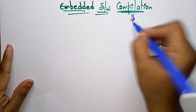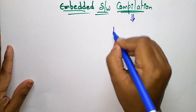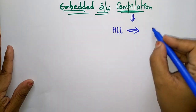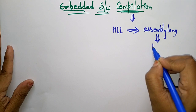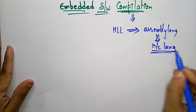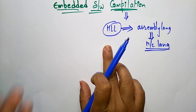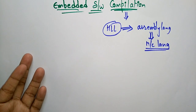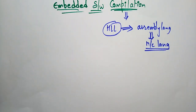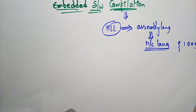Compilation is nothing but a conversion of one language to another language. The high level language is going to be converted into assembly language and then to machine level language. This machine language can be understood by the processor. The user can understand the high level language, and to convert all these steps into machine level language in the form of 1s and 0s, compilation is useful. Compilation is a software which is used to convert one language to another language.